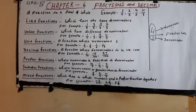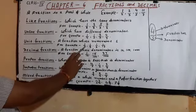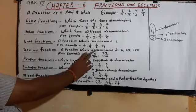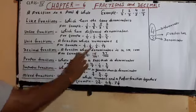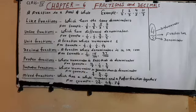Third, unit fractions. A fraction which has numerator 1. For example, 1 by 2, 1 by 3, 1 by 6, 1 by 13. You can see all the numerators are 1. So, a fraction whose numerator is 1 is called the unit fraction.